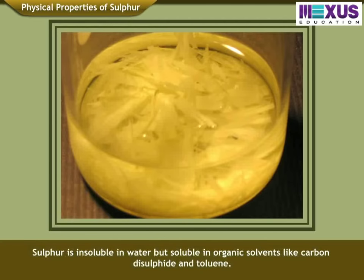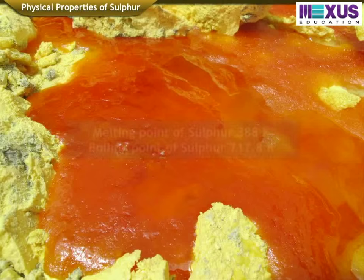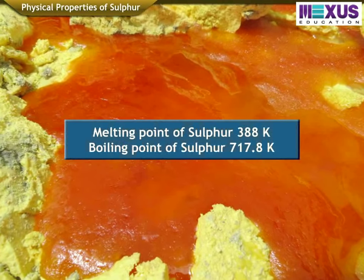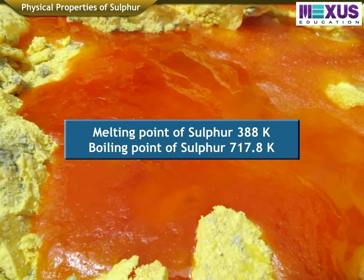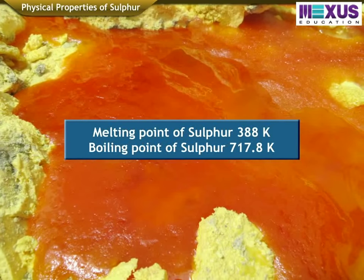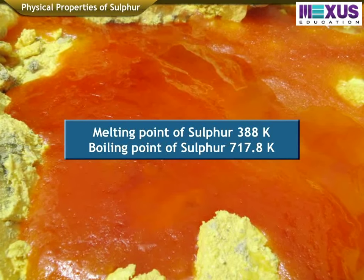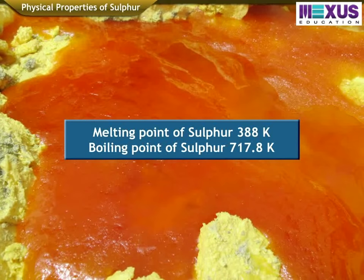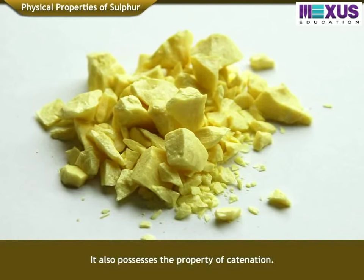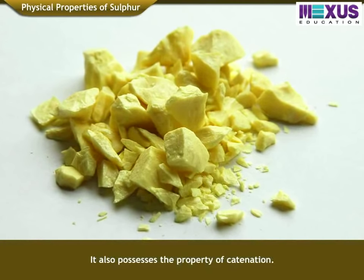It is insoluble in water, but soluble in organic solvents like carbon disulfide and toluene. Sulphur has a low melting point of 388 Kelvin and a boiling point of 717.8 Kelvin. It also possesses the property of catenation.